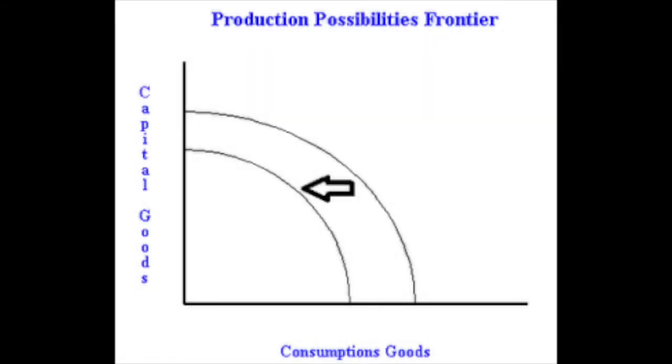A good example of something that would cause an inward or negative shift of the PPC curve is if the workers at a factory producing cars went on strike and there was a temporary decrease in the number of people producing goods. This would obviously cause fewer goods to be produced and in turn would cause an inward shift of the production possibilities curve.